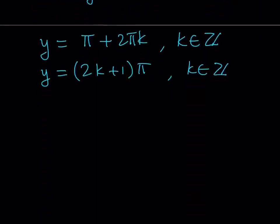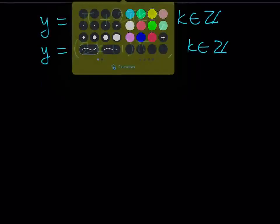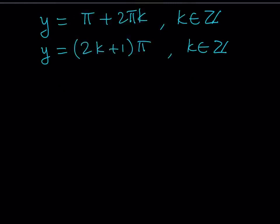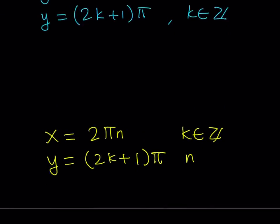Let's write it down as a conclusion. The x values are written as 2πn, and the y values are written as (2k + 1)π, where n is an integer and k is an integer. This gives us all the solutions.